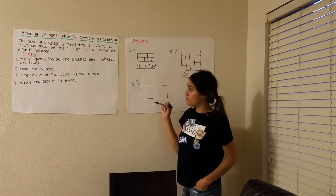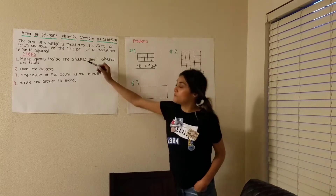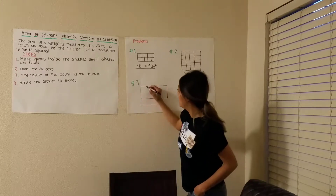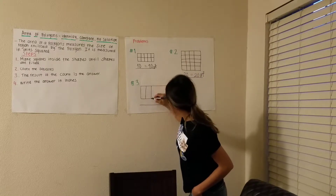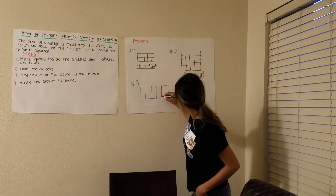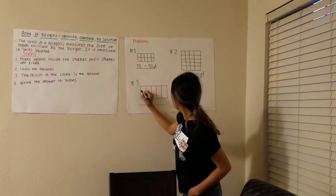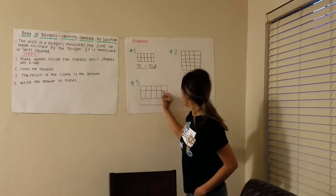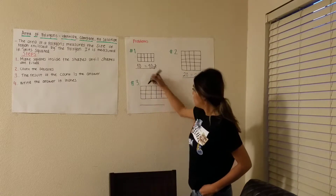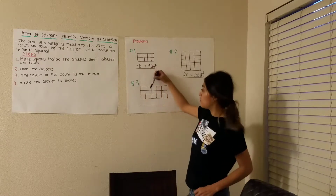Problem three. This is the same thing — we have to follow the steps. Step one. Step two: we have to count the squares.